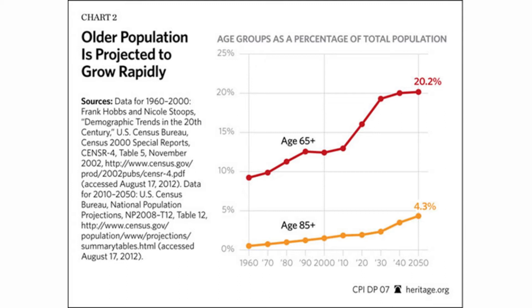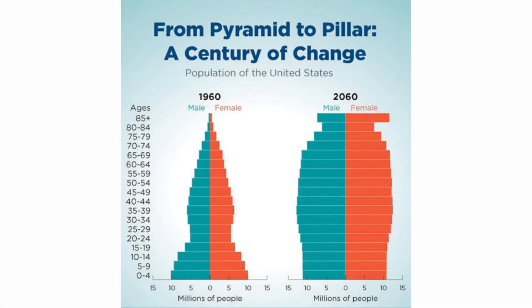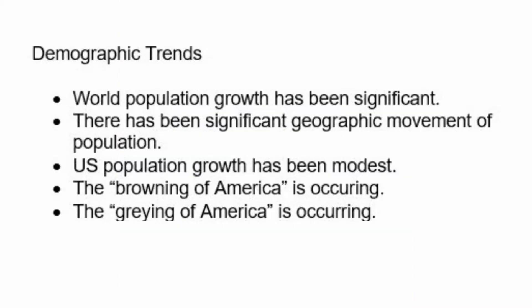The chart shows that the 65-plus category was 10% of the population in 1960 and is expected to rise to 20% by 2050. Another way to look at this is that the profile of the population in the U.S. is changing from a pyramid to a pillar. Here is a summary of the demographic trends identified.